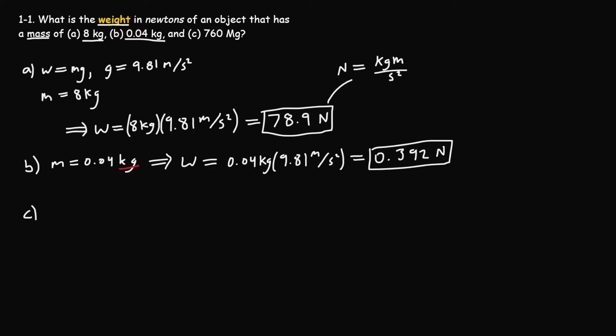Now part C. We're given a mass of 760 megagrams. Since this mass is not in kilograms, we need to convert megagrams into kilograms to get regular newtons. One megagram is equal to 1 times 10³ kilograms, or 1,000 kilograms.